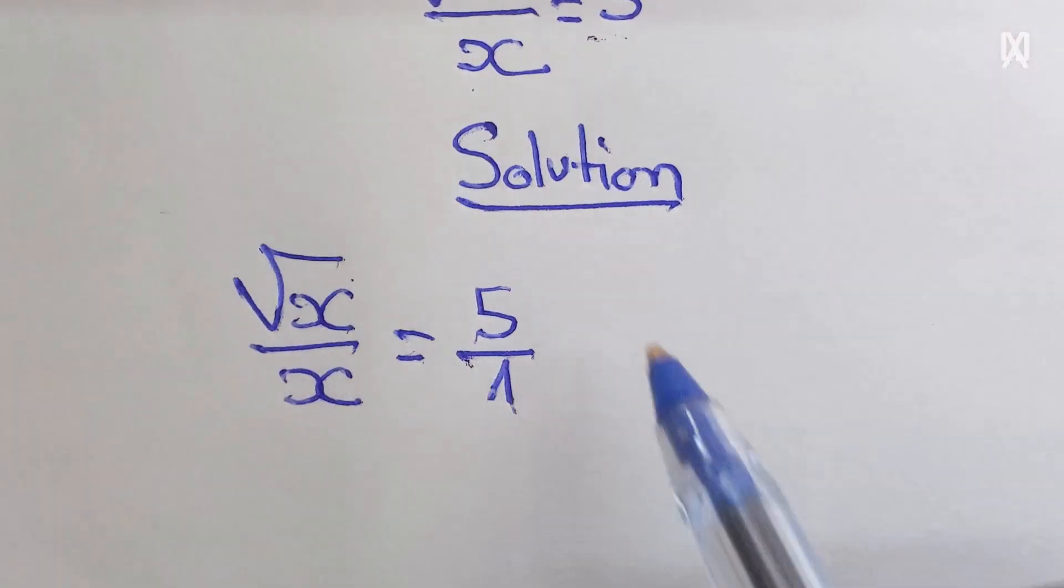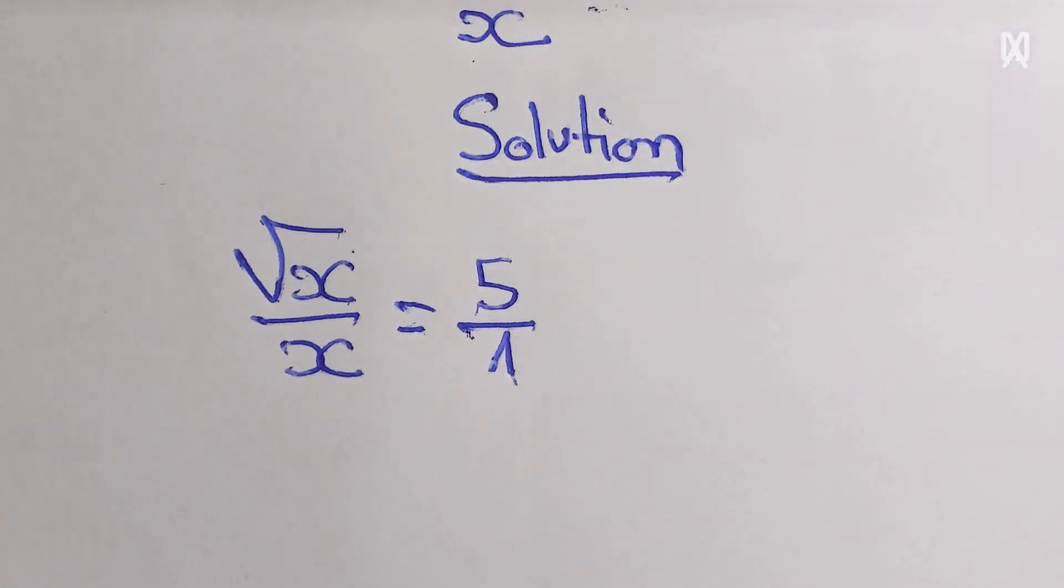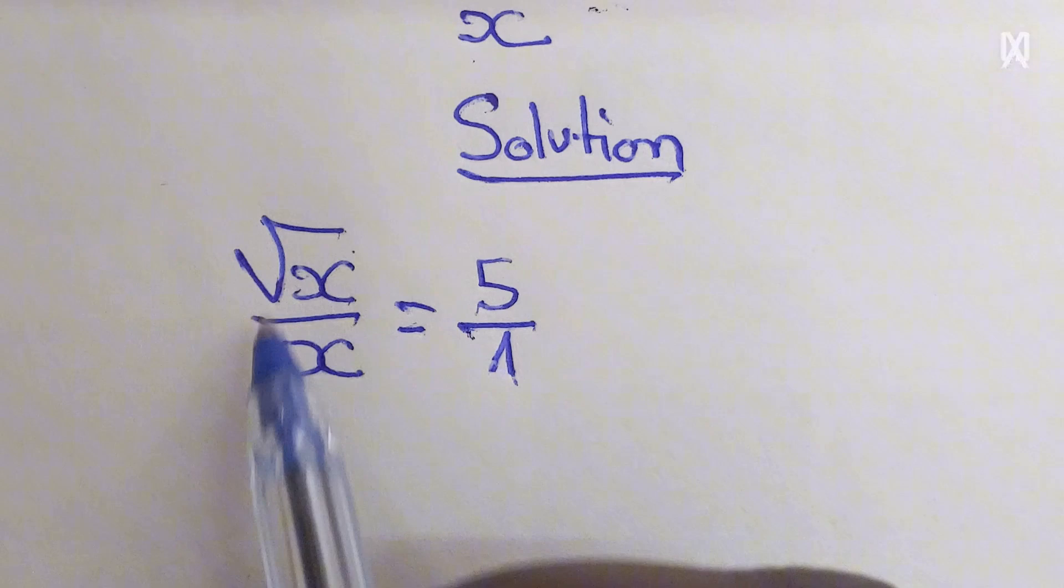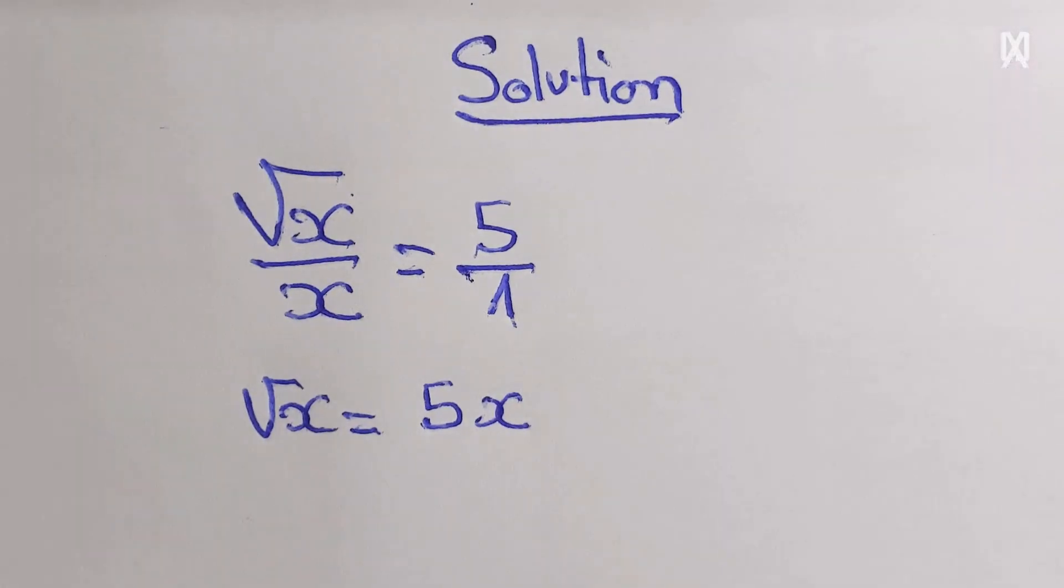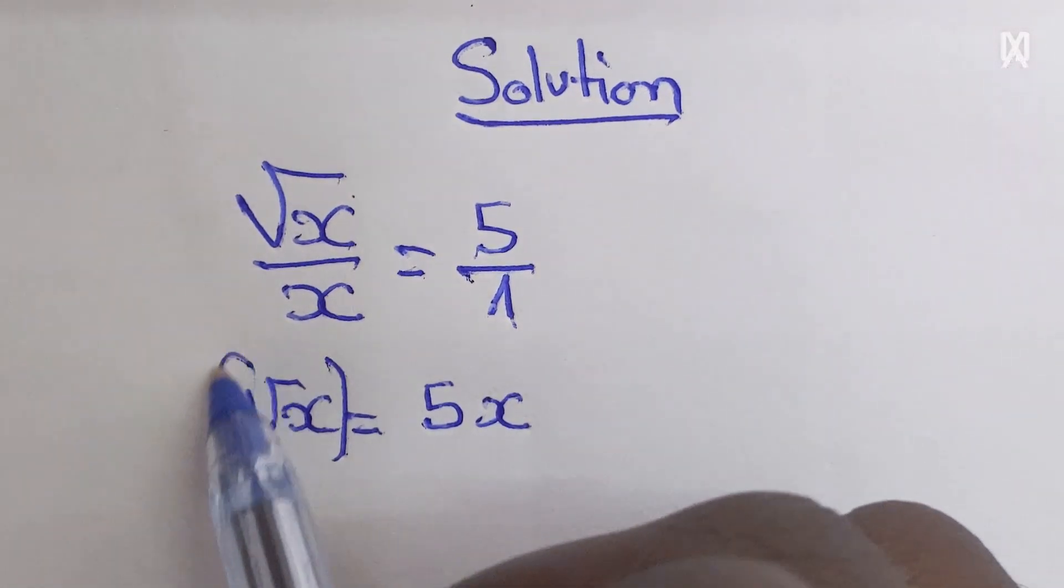Let's put a common denominator here, then make cross multiplication. This is equal to square root of x equal to 5x.